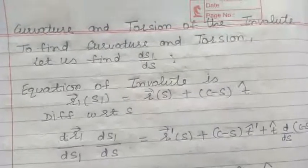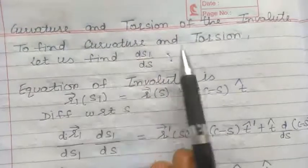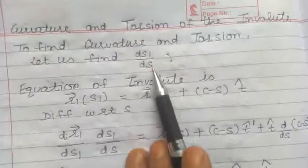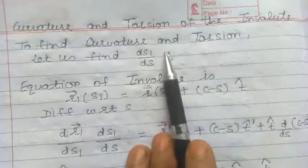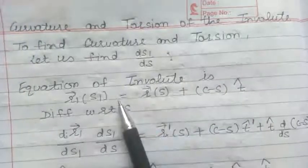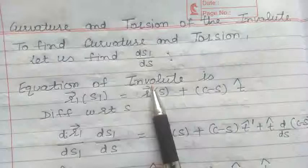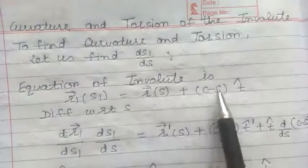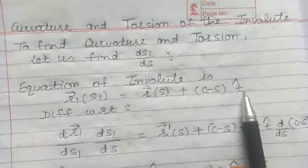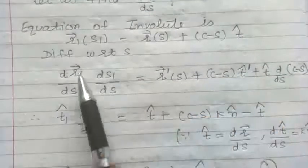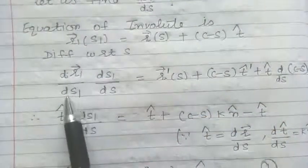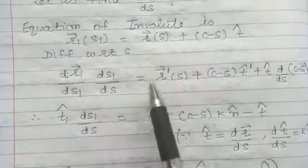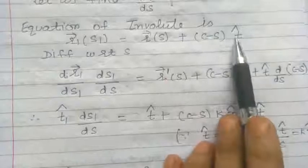Substituting the value of lambda into equation one, we get vector R1 equals vector R plus (C minus S) times T cap. This gives us the equation of involute C1 for the curve C. Next, we find the curvature and torsion of the involute. To do so we require the value of dS1/dS, so firstly let us find this value from the equation of involute already derived.